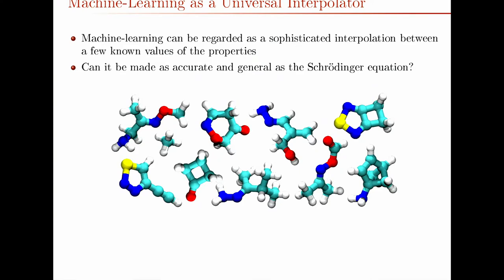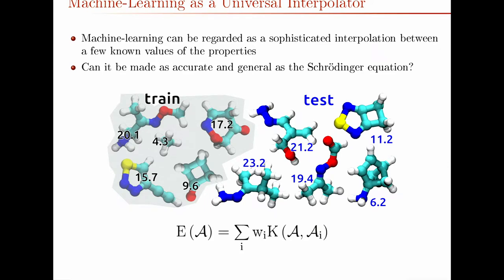Say you want to calculate the energy of one of these small molecules. The way that you do it is to collect a training set of some of these molecules for which you calculate the energy using your ab initio method. And then to predict the energy of one of these test molecules, you compare it to each member of the training set and predict the energy as a weighted average over a function we call the kernel, which gives the similarity between your testing molecule and each member of your training set. You can get these weights W_i just by a regularised matrix inversion.